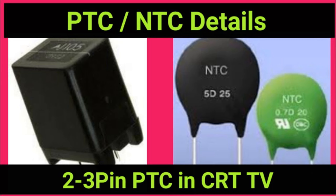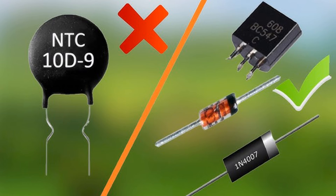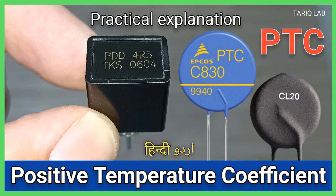NTC thermistors are resistors whose resistance decreases as the temperature increases. Here's a detailed look at how they function. NTC thermistors are typically made from semiconductor materials such as metal oxides — e.g., manganese, cobalt, nickel — which have properties that cause their resistance to decrease with rising temperature. At lower temperatures, the resistance of an NTC thermistor is high, as the semiconductor material has fewer charge carriers available for conduction. As the temperature rises, the material's charge carriers — electrons or holes — increase due to thermal excitation, which reduces the material's resistance.